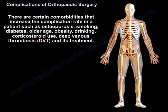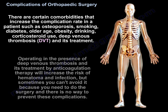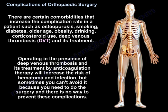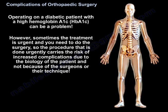Certain comorbidities increase the complication rate, such as osteoporosis, smoking, diabetes, older age, obesity, drinking, corticosteroid use, and DVT and its treatment. Operating in the presence of deep vein thrombosis and anticoagulation therapy increases the risk of hematoma and infection — but sometimes you can't avoid it and must proceed. Operating on a diabetic patient with high hemoglobin A1c can be a problem; however, sometimes treatment is urgent. The procedure done urgently carries increased complication risk because of the patient's biology, not the surgeon's technique.